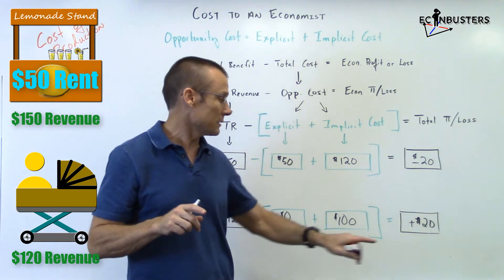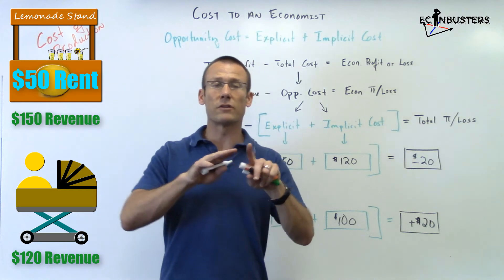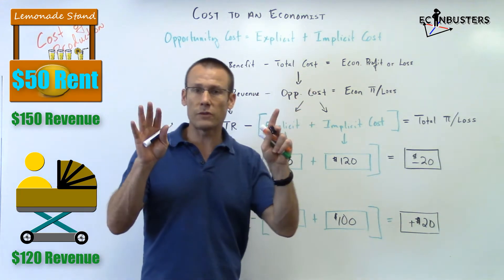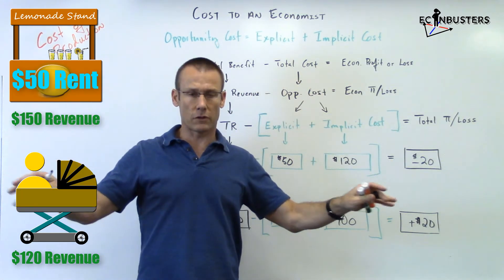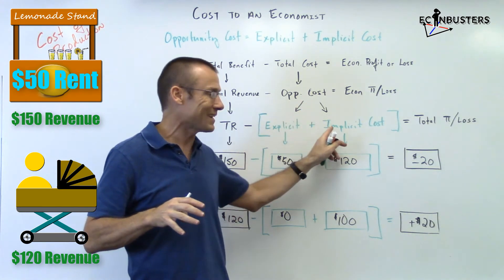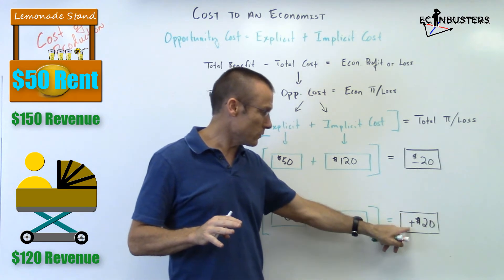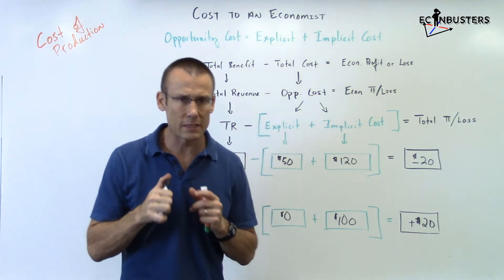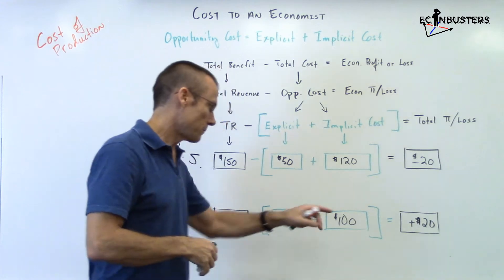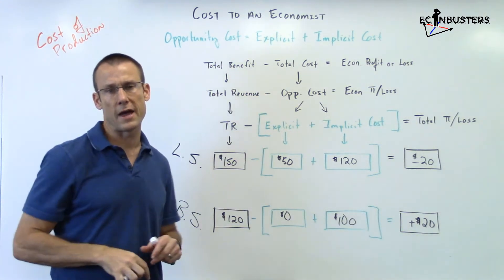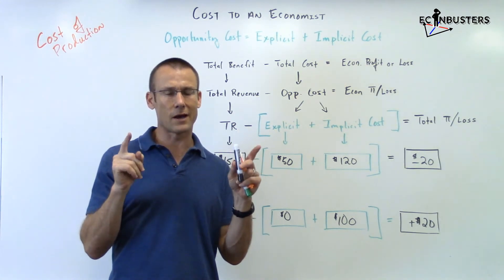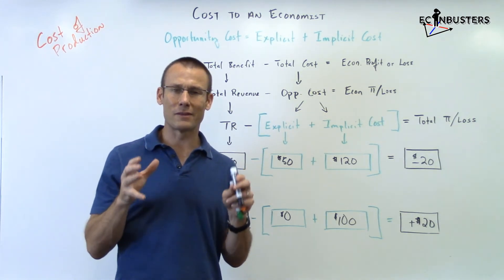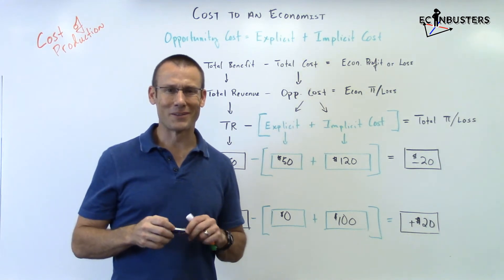In economics, if you get a positive number — even just positive one — that means it is the best decision; it is better than all other alternatives. Everything has been considered: both implicit and explicit costs. That's what the economist does — they look at total cost, the opportunity cost. A positive number means go do it. That's what an economist is really thinking about: should I do something? Positive number — yes, that is your best decision. Economics is all about decision making.